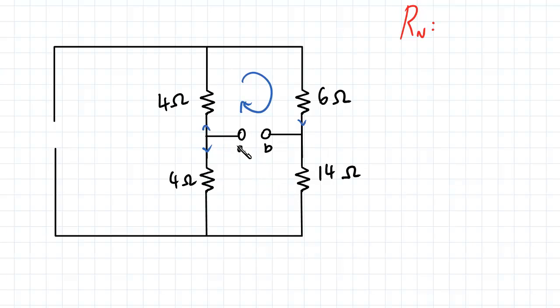And alternatively, we can go through this 4 ohm resistor and the 14 ohm resistor here, through this loop over there.